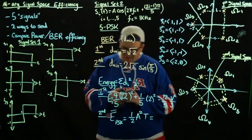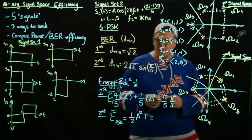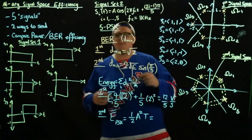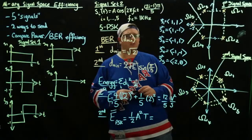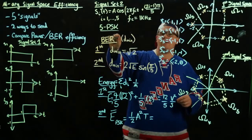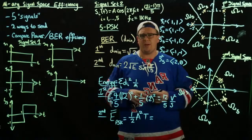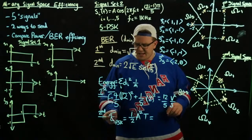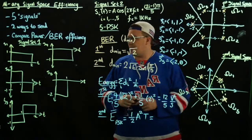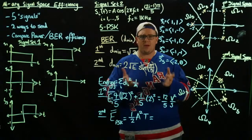We have expressions for d_min and for the energy — these are what we want to compare. What we do generally is equalize the bit error rates, because when you equalize the bit error rates you're equalizing the performance: both systems will have the same probability of error. We can then plug this energy in and solve for an A that makes d_min the same for both systems.